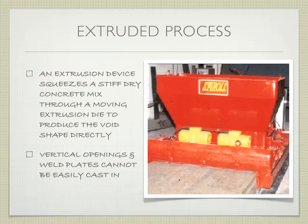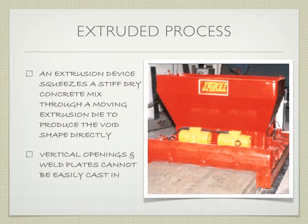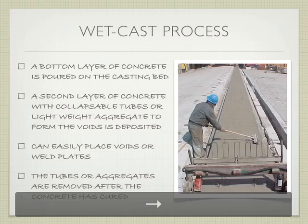The extruded process takes an extrusion device — a hopper where you dump in a very stiff, dry concrete mix — and pushes it through a die that represents the ultimate shape you want. It's like frosting a cake with a tip that has the cross-section you want. We're squeezing the very dry concrete into the shape based on the die on one end of the machine. The downside is that vertical openings and weld plates cannot easily be cast in — the machine just pushes concrete through start to finish, so there won't be a lot of special modifications.